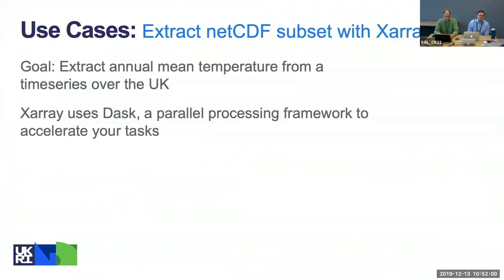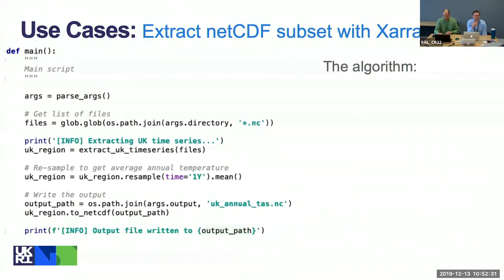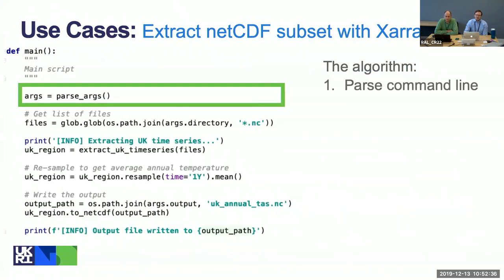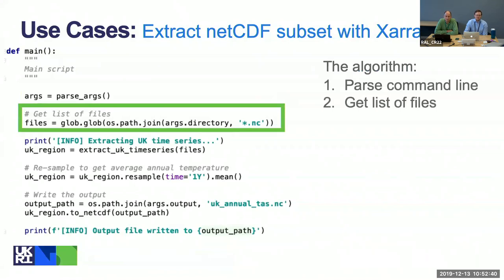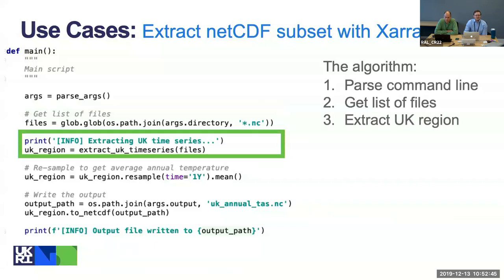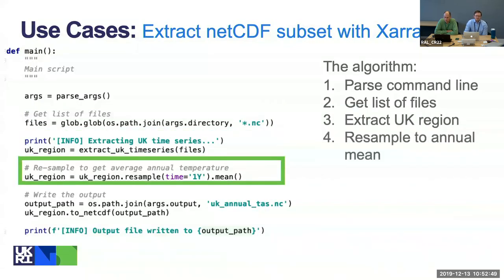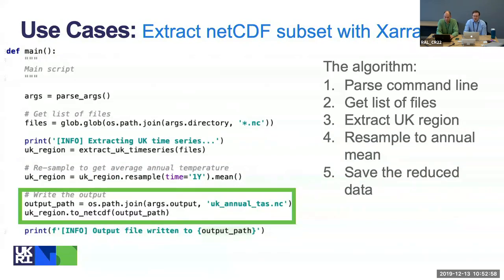Next we're going to look at XArray in the context of NetCDF. What we're trying to do is extract the annual mean temperature from a time series over the UK region. One thing about XArray is it uses a framework called Dask, which is a parallel processing framework that allows your computer to break down the task into smaller chunks and run it in the background, helping it to run faster. The algorithm is similar: parse command line arguments, get a list of files, extract our UK region, resample the UK region to make an annual average, and then create a new NetCDF file with the UK annual surface temperature time series.